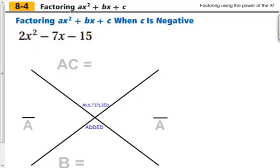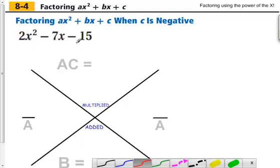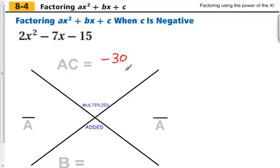So again, let's take a look at this example. We have a negative 15 and a positive 2. So it's going to give us negative 30 when we multiply them together. Negative 7 is what we are going to get when we add them together.